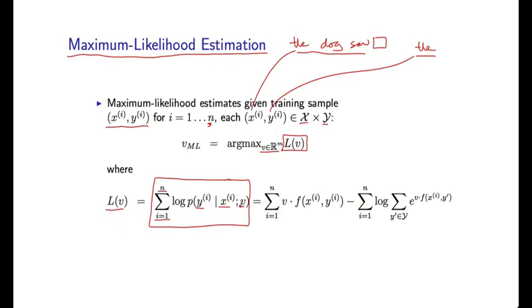Now intuitively, we would like these probabilities to be as high as possible, reflecting the fact that our parameters v fit the data well. And so if we maximize this function L of v, we will have put high probability on the training examples that we actually see.